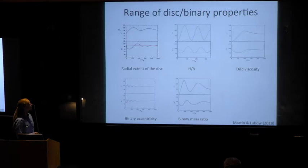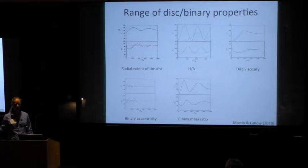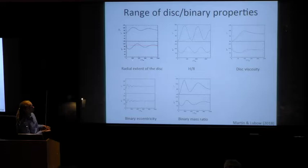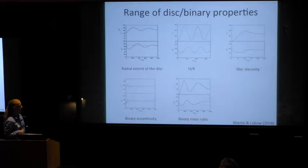We explored a wide range of disk and binary parameters. Increasing the radial extent of the disk, the polar alignment process still occurs, but if increased sufficiently, the disk is no longer in good communication and can lead to disk breaking. The same is true if we decrease the disk aspect ratio. Increasing viscosity leads to faster damping. Binary eccentricity and binary mass ratio also affect the result. We find it's a very robust mechanism that operates for a wide range of parameters.